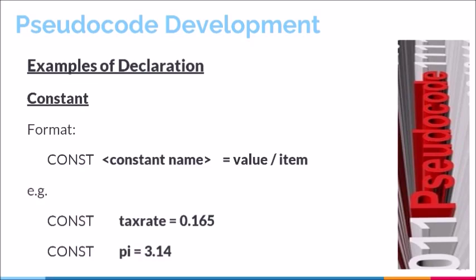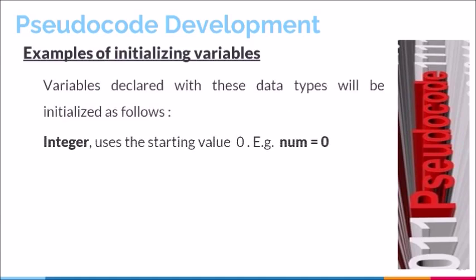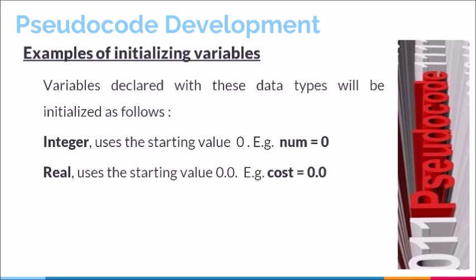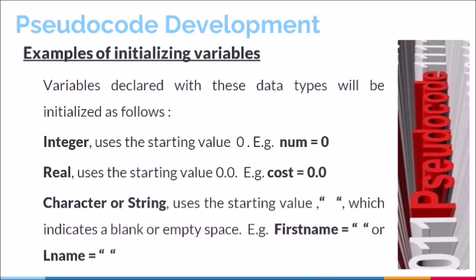Step three in the pseudocode development process is initialization. Initialization is the process used to set a starting value to our variables. The starting value used is dependent on the data type attached to the variable name. For integers, we use a starting value of 0 — for example, num = 0. For real data types, we use 0.0 — for example, if cost is declared as real, cost = 0.0. For characters and strings, we use open and close quotation marks, indicating a blank or empty space being placed inside the variable.